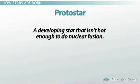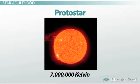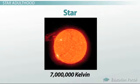A protostar is a developing star that isn't hot enough to do nuclear fusion. It takes time, but the protostar eventually becomes hot enough, around 7 million Kelvin, for nuclear fusion to occur in its core. At this point, the protostar is considered a star.